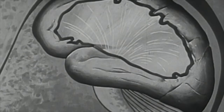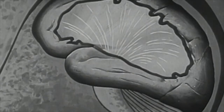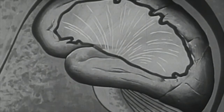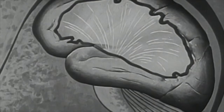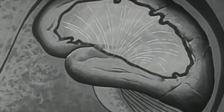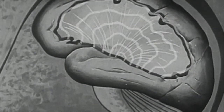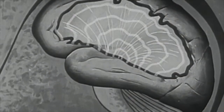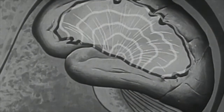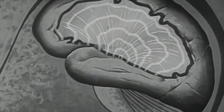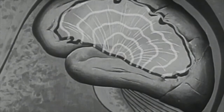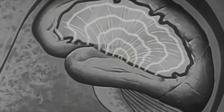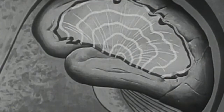Beneath this is a mass of white matter composed of fibers extending from the nerve cells or leading to them. These transmit impulses from the nerve cells throughout the brain and out to the rest of the nervous system. They also carry impulses from the sense organs to the cortex.